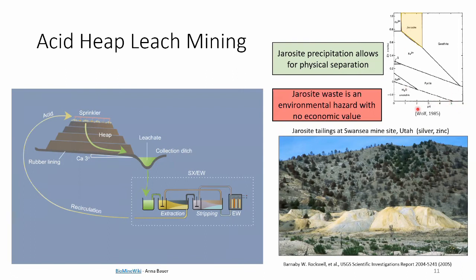Here's an example of a Pourbaix diagram — remember, pH on the X axis and voltage on the Y axis. One of the methods to separate unwanted elements like iron and sodium or potassium from the dissolved ions is through a precipitation reaction. One of the byproducts of that precipitation is called jarosite. It has no economic value, so mines would just dump it on site, and it could cause environmental hazards — if it mixes with rainwater it can cause acidification of the water.